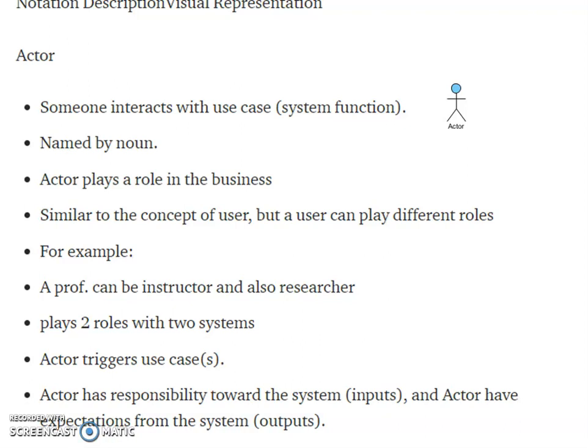And the notation description is depicted here. And then actor is represented by this symbol. Actor means someone interacts with the use case or functionality. It is named by a noun. Actor plays a role in that business. And it is similar to a user, but the user can have more other functionalities rather than this actor. For example, a professor can be an instructor and also he can be a researcher. That is, he is playing two roles with two systems, two different systems.